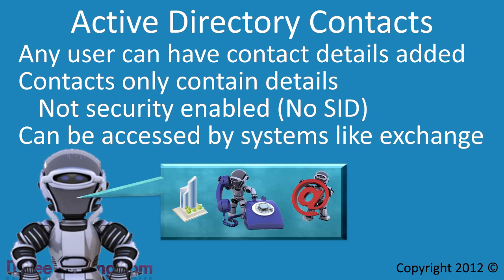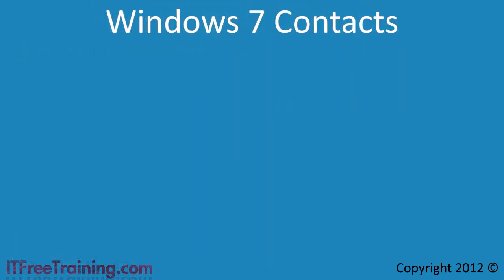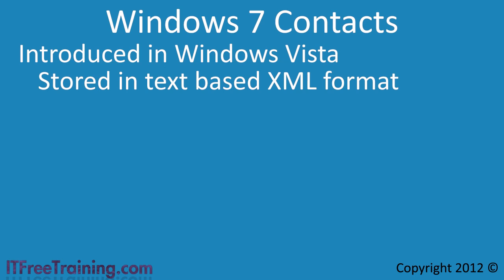Before I look at how to use contacts in Active Directory, I will first look at how contacts work in Windows 7 in case you need to use contacts on a local machine only. Contacts for the client operating system were first introduced in Windows Vista. Windows Vista came with a built-in email client called Windows Mail. Contacts were stored in a text-based XML format, meaning that any software on the Windows operating system, even non-Microsoft software, is able to read the information in the contact files.